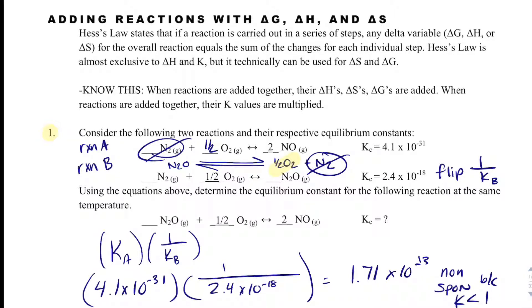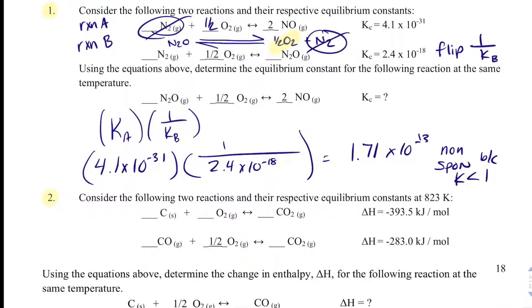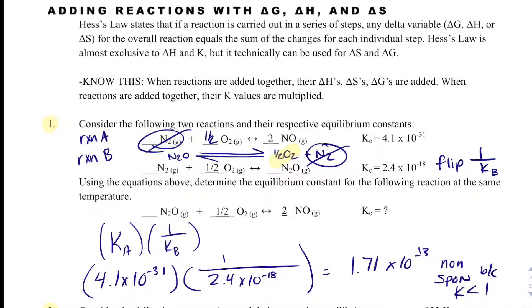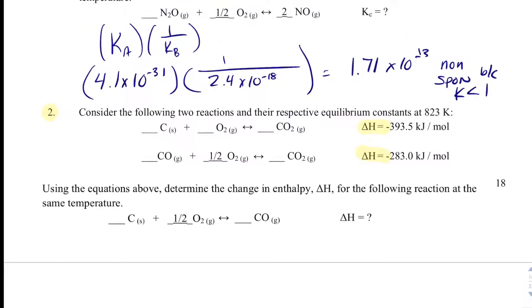Now, how do you combine delta H values for a reaction? When we add reactions, we multiply their K values, but if our value has a delta, like delta H, delta S, or delta G, then we're just going to add the delta H's together, or the delta G's, or the delta S's.